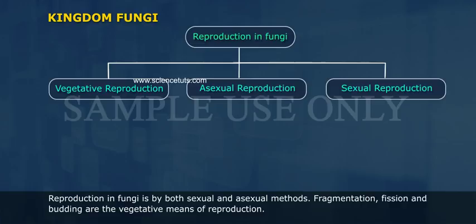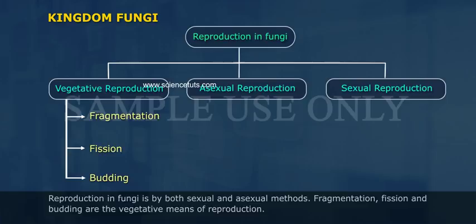Reproduction in fungi is by both sexual and asexual methods. Fragmentation, fission, and budding are the vegetative means of reproduction.